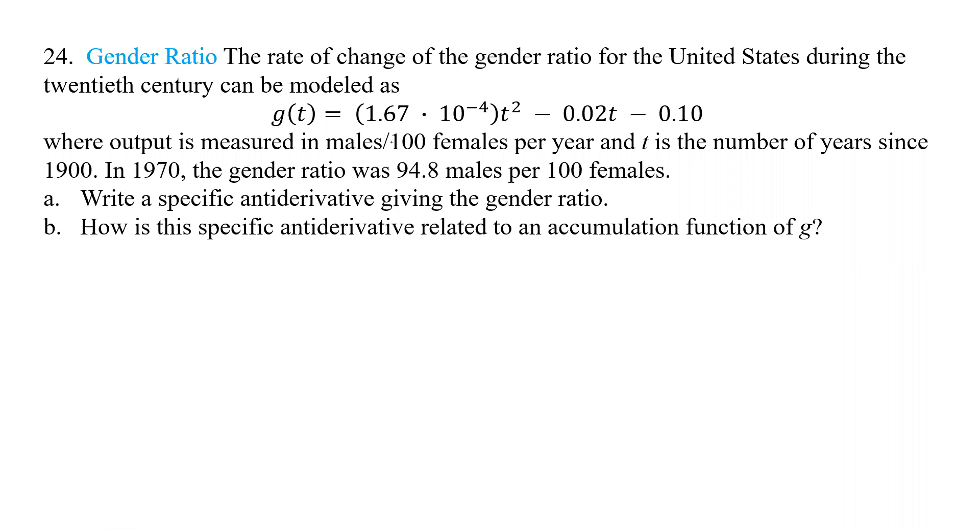Where output is measured in males per 100 females per year, and t is the number of years since 1900. So in 1970, the gender ratio was 94.8 males per 100 females.